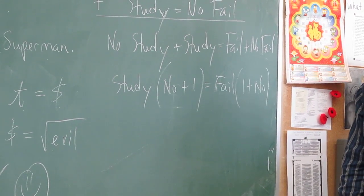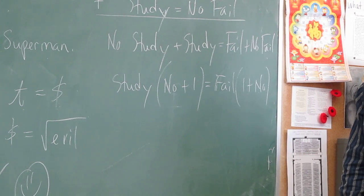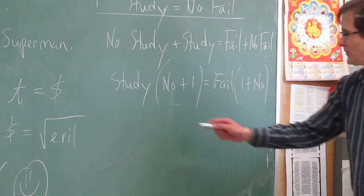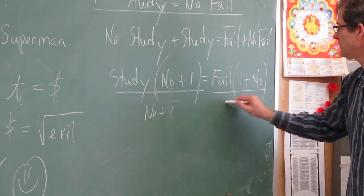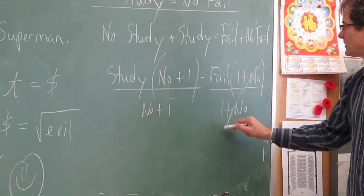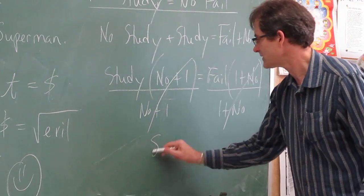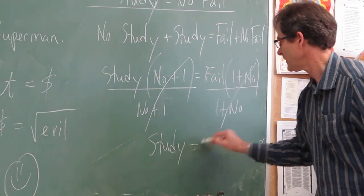Now, can I simplify this? Divide both sides by no plus one. It's the same as one plus no. So those cancel and those cancel. So therefore, study equals fail.